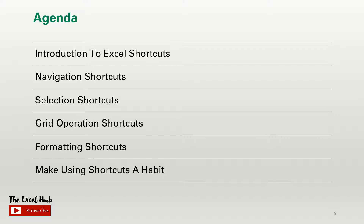This brings us to the end of this series. To summarize, we started by introducing shortcuts and explaining why they are important. We then covered navigation shortcuts to help you move around an Excel workbook efficiently. Next we discussed selection shortcuts, which involved selecting cells, columns and rows. This was followed by grid operation — in other words inserting and deleting cells and filling columns and rows. Finally we covered formatting shortcuts, which involved shortcuts to make Excel sheets look more professional.